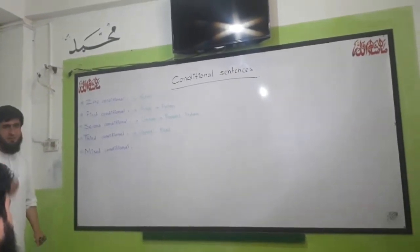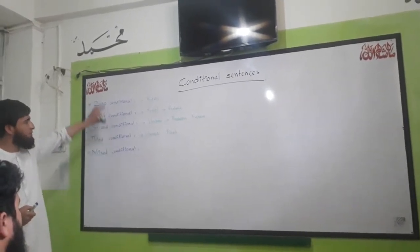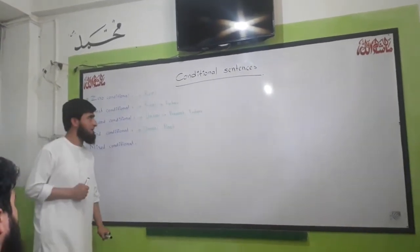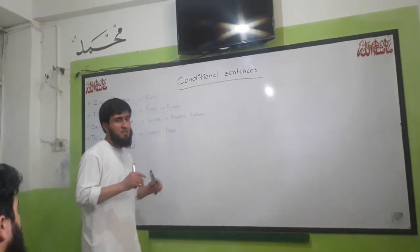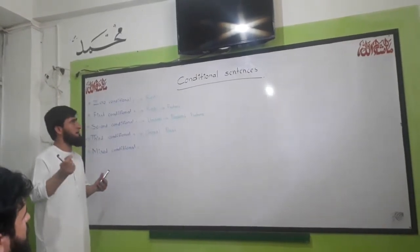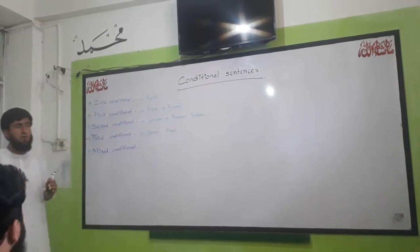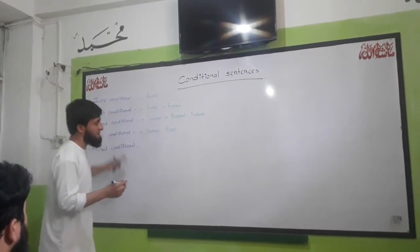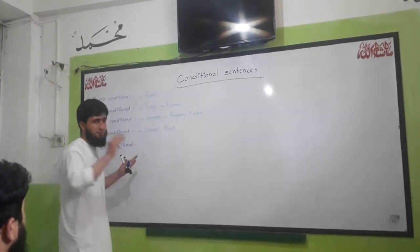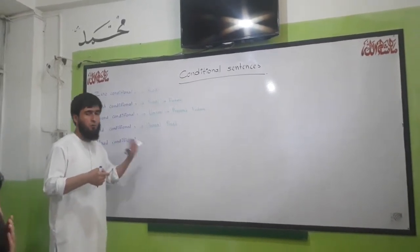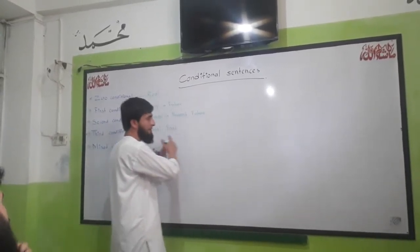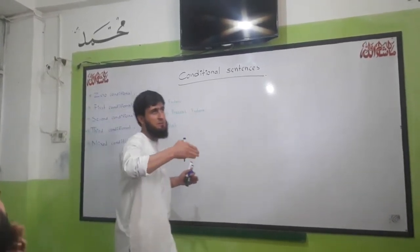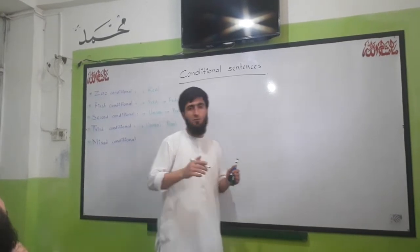We have the zero, first, second, third, and mixed conditional sentences. Let's begin with zero conditional. Zero conditional is a real conditional and refers to things which are always true. Sometimes we say that zero conditional sentences are used to talk about habitual actions. For the formation, you use 'if' or 'when' at the beginning of the sentence, and both sides should be in simple present tense — simple present in the if-clause and simple present in the result clause.